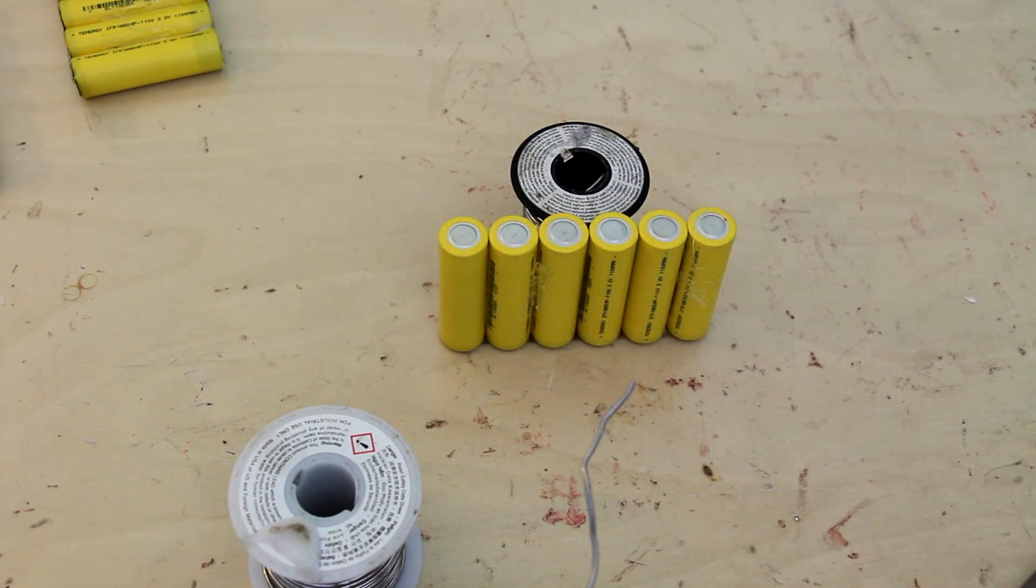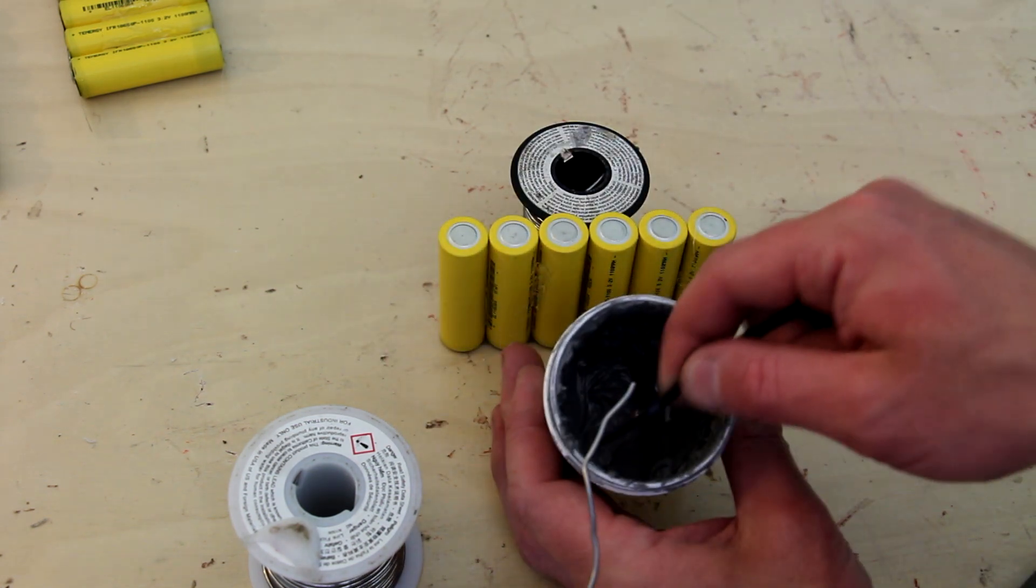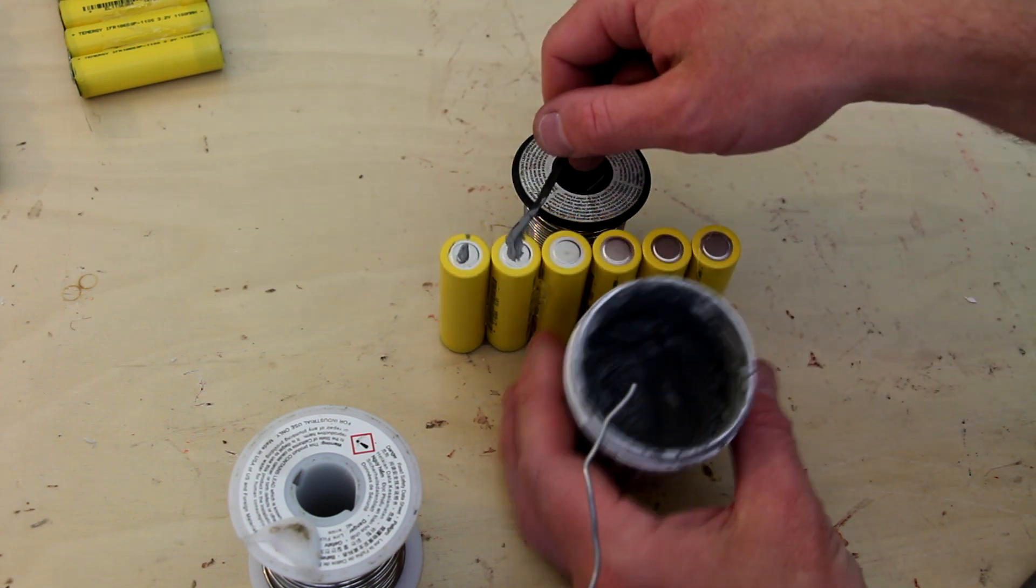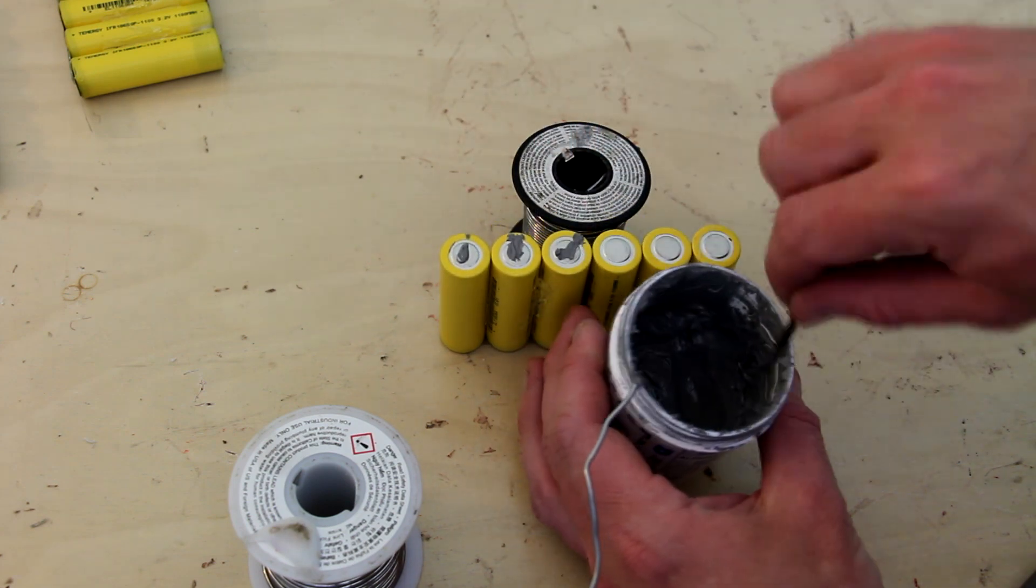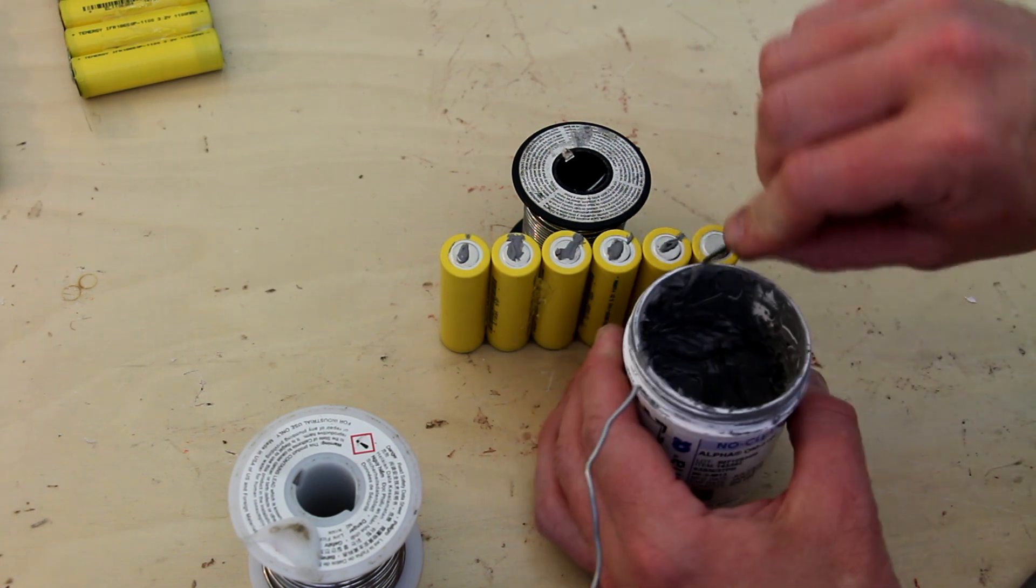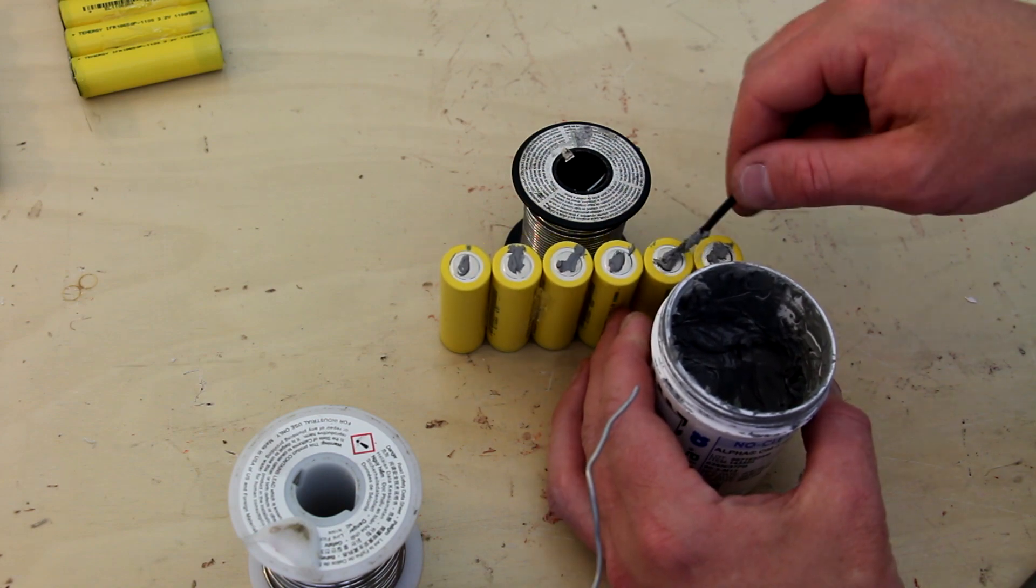Once nickel strip is connected to one side, simply flip the batteries over and repeat the process on the other side. Thus, all the positive leads are connected together and all the negative leads are connected together for each set of six. You're going to need four sets of six batteries like this.